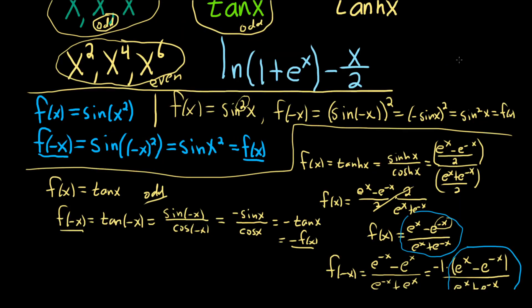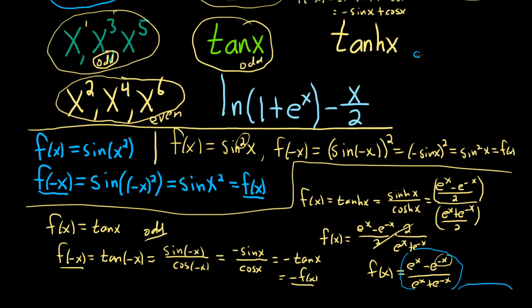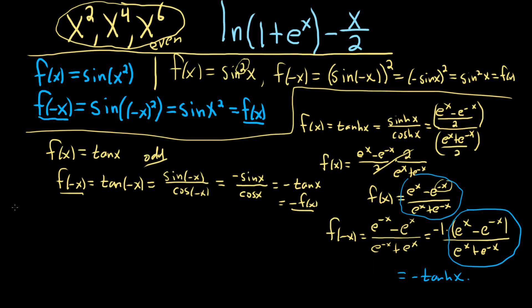We showed that without using any knowledge of hyperbolic sine or cosine other than the definition. The last one is pretty easy. g of x equals ln of (1 plus e to the x) minus x over 2. We're trying to see if it's even, odd, or neither — I think it's going to be neither, but let's work it out.